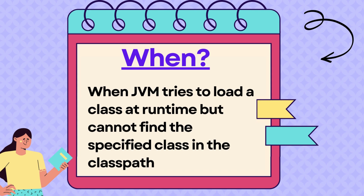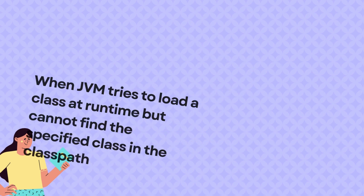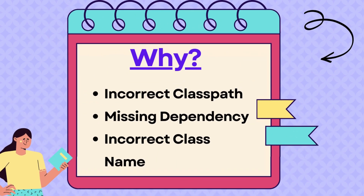Now let's try to understand the different scenarios which cause this exception. The first one is an incorrect classpath. If the class which the JVM is trying to load is not present in the classpath, or is at a different location, then this exception will be thrown.